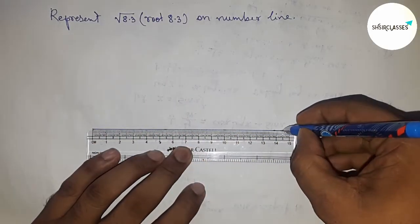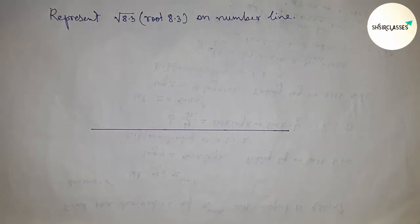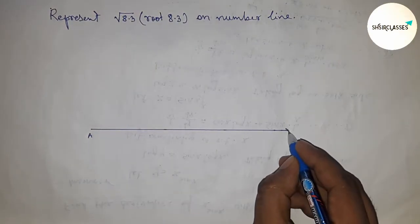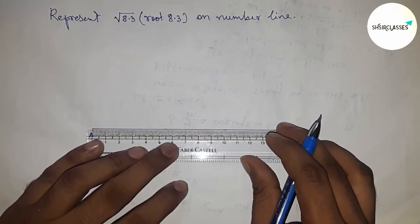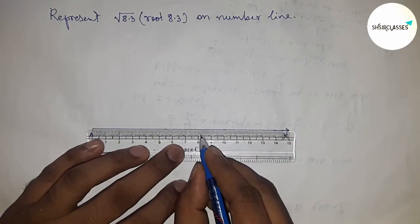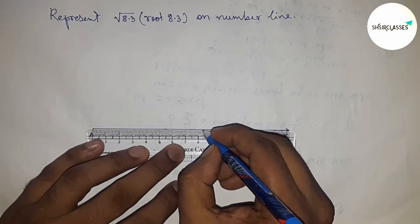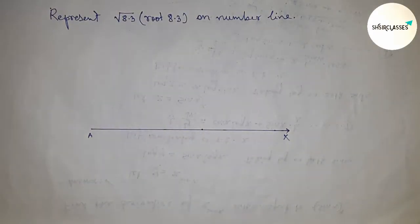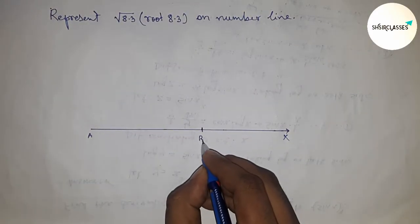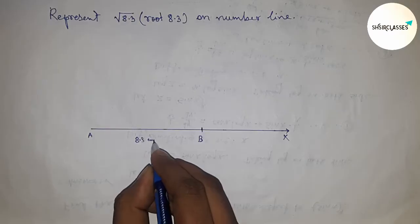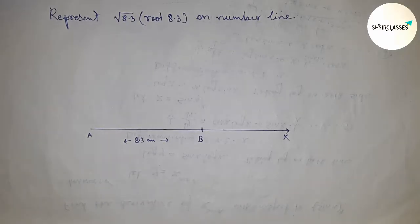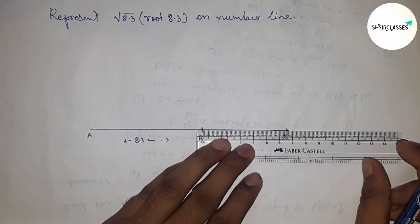This is the x-line. Next, take the length 8.3 centimeters and mark the line. This is point B, so AB is an 8.3 centimeter length line. Next, put the scale on from B to C and mark the line.